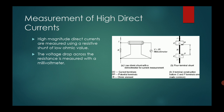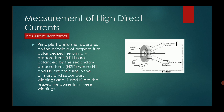For measurement of high direct currents, we have a setup with a low ohmic shunt and a millivolt meter. The current passes through this shunt, and it is the millivolt meter which actually measures the current. The high magnitude of direct currents are measured using a resistive shunt of low ohmic value. The voltage drop across the resistance is measured with the millivolt meter — from the voltage drop across a known resistance, we can calculate the current.